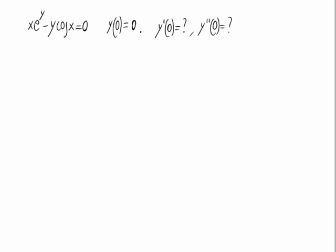We can check that the expression on the screen defines the variable y as an implicit function of x at x equals 0. We are told that y(0) is equal to 0, that is, when x is 0, y is also 0. We are asked to calculate the first and the second derivative of y at 0.